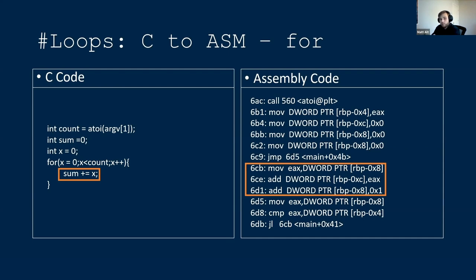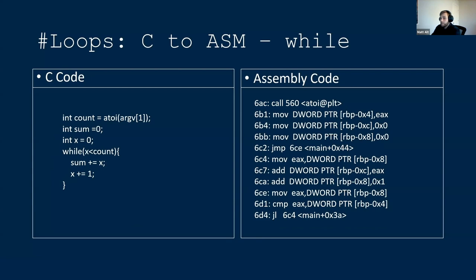Another type of loop is the while loop, and it looks very similar from the assembly perspective. The difference is there's no initial assignment of X to zero. The first thing it does is jump down and check that X is less than count before continuing, then do the same loop body. Determining whether it's a while loop or a for loop may be important later, but while these look different in C, their assembly representation is fairly similar.